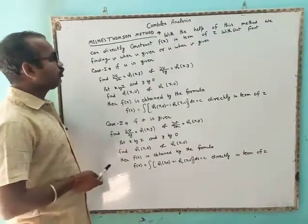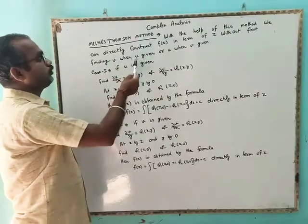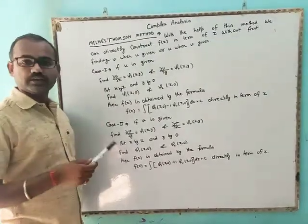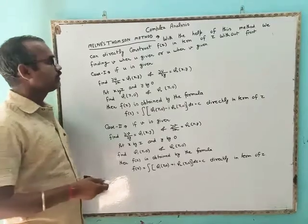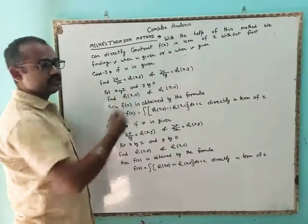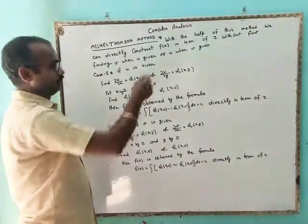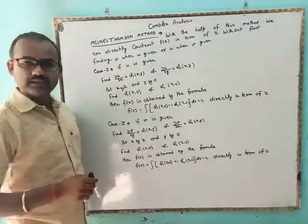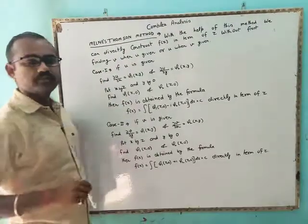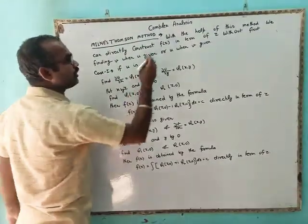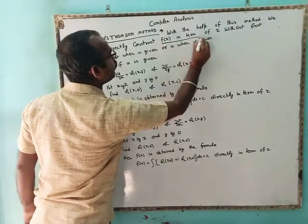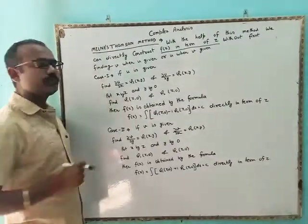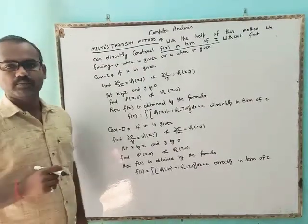Normally, if only u is given then we find out v, and then use f(z) = u + iv. Or if v is given then we find out u, and then f(z) = u + iv. But with the help of the Milne-Thompson method we can directly convert any function f(z) into terms of z. In this method, four cases are available.